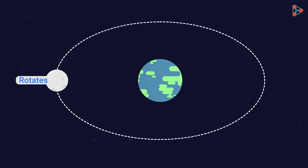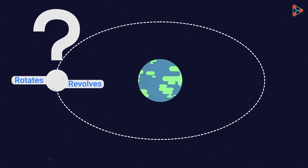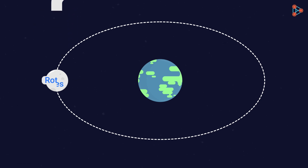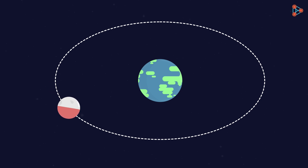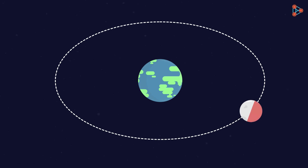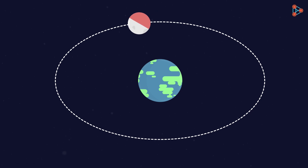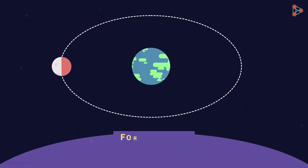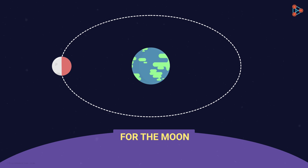We know that the moon rotates about its axis and revolves around the earth. But how does this really happen? For better understanding, let's mark the side which can be seen by the earth in a different colour. Now many of us imagine the moon's movement to be happening like this — rotating about its axis and revolving around the earth — where the moon is completing many rotations before it completes one complete revolution. But that's not how it works, which brings us to the most important concept here.